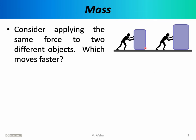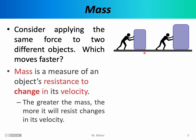Clearly the answer depends on what the crates are made of or what's inside them. If the large crate is empty and the small crate is filled with bricks, then the large crate will move faster. If both are solid blocks of the same type of wood, then the small crate moves faster. Ultimately the answer depends on the mass of the two crates. Fundamentally, mass is a measure of an object's resistance to change in its velocity — not resistance to velocity itself, but to a change in velocity — so mass is a measure of an object's resistance to acceleration.